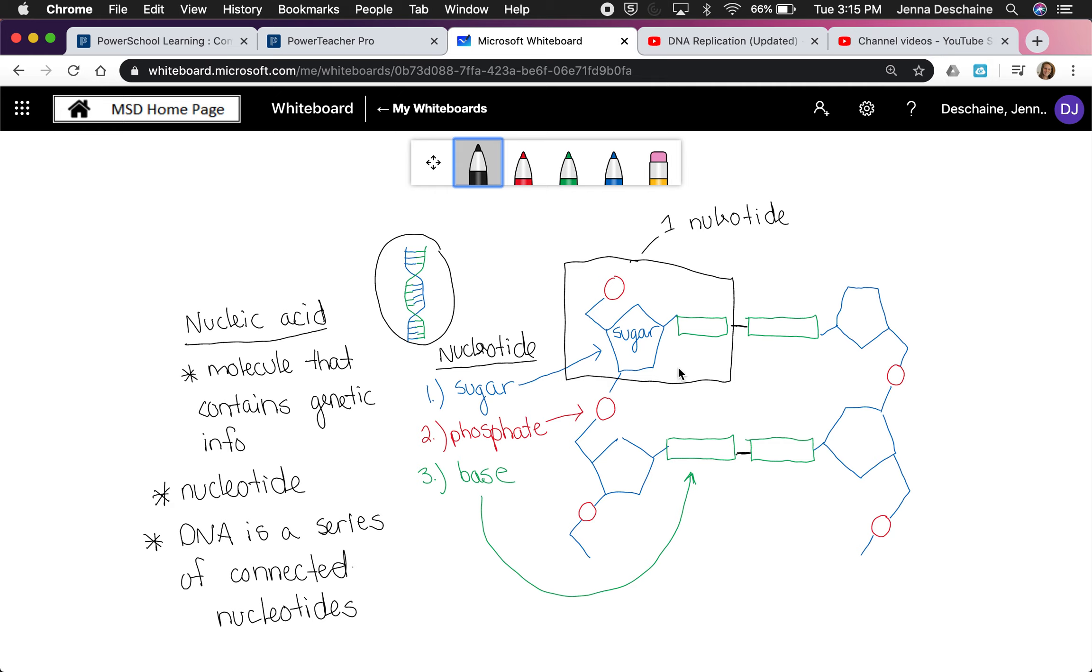What's really important about a nucleotide and within DNA is actually the base. A base is just a part of the nucleotide that really makes the DNA unique because there's different bases, and depending on what order they go in, that's what makes you unique from other people. So there are four different bases in a nucleotide.